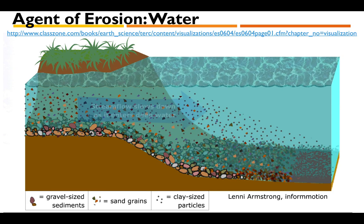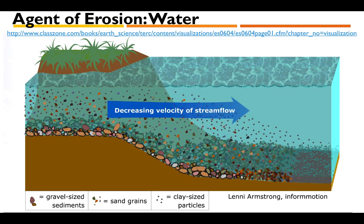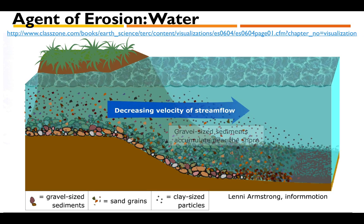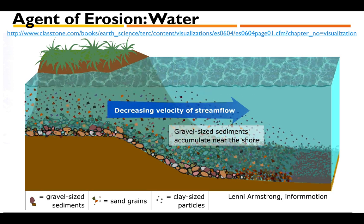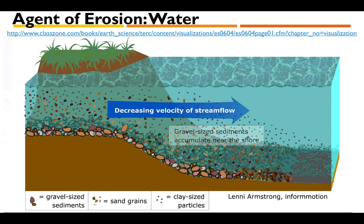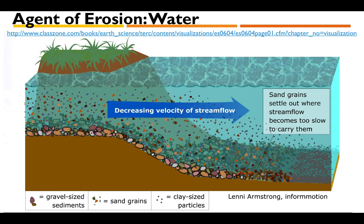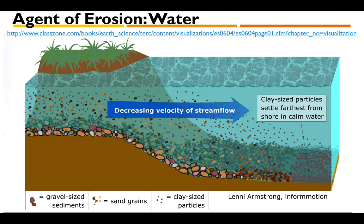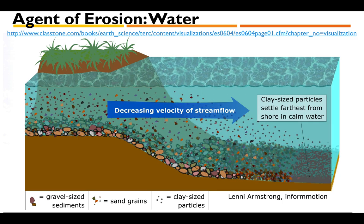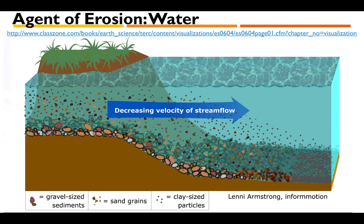As the stream is flowing, you can see that different rocks and sediments are also moving with the water. Some of them drop off in the water while some get carried a little bit further, depending on the size of the sediment. As the water flows, it's also transporting the particles with it — that's exactly what erosion is.